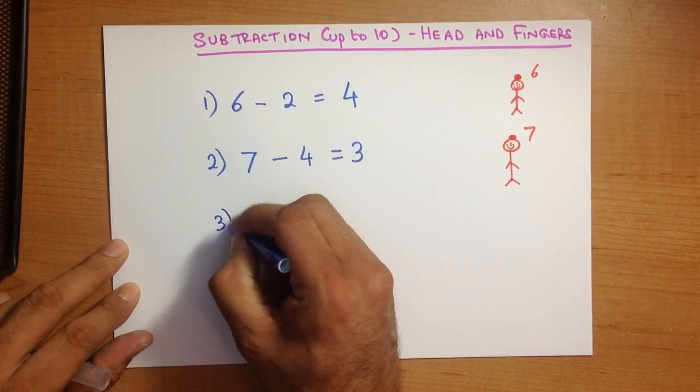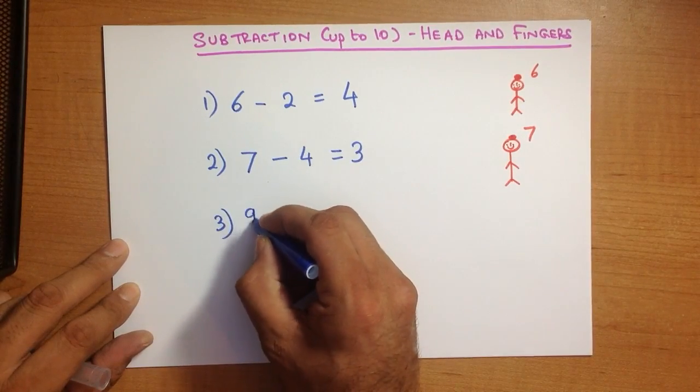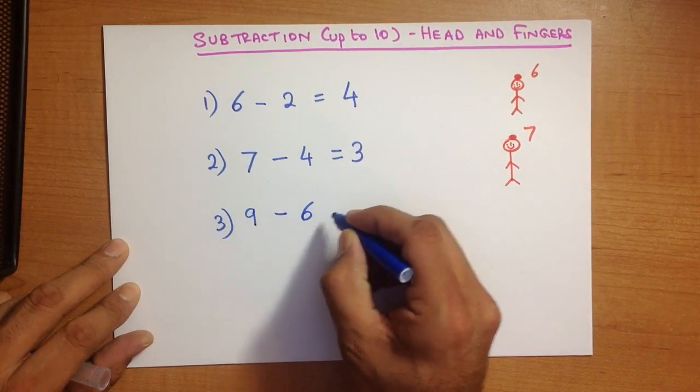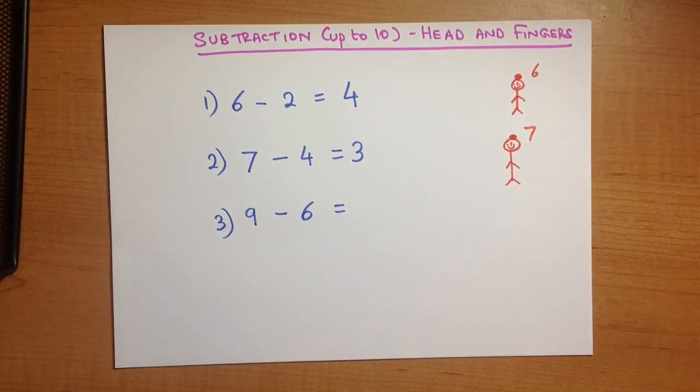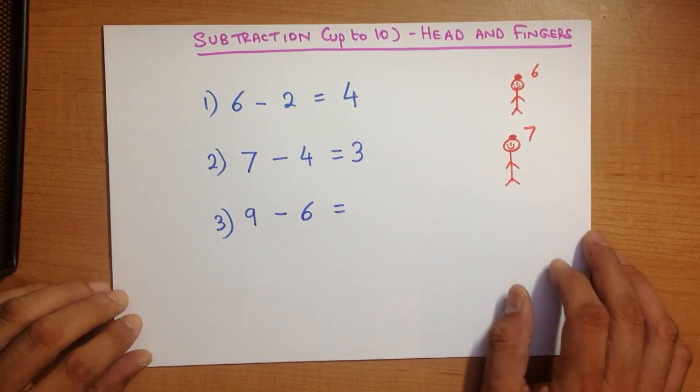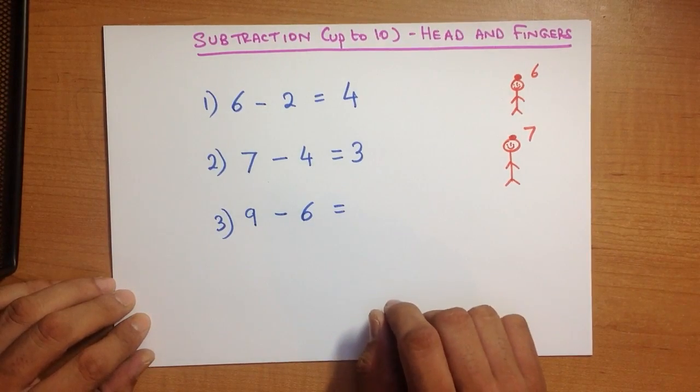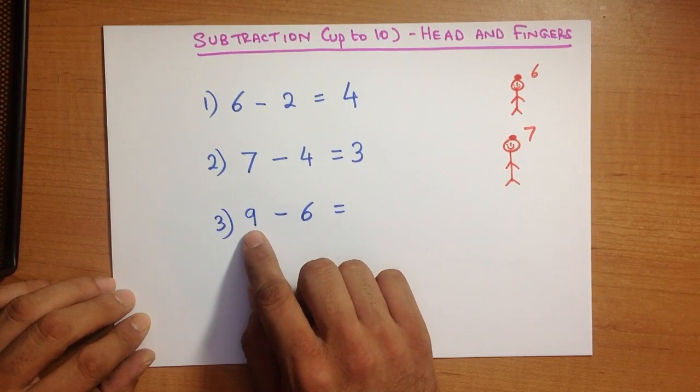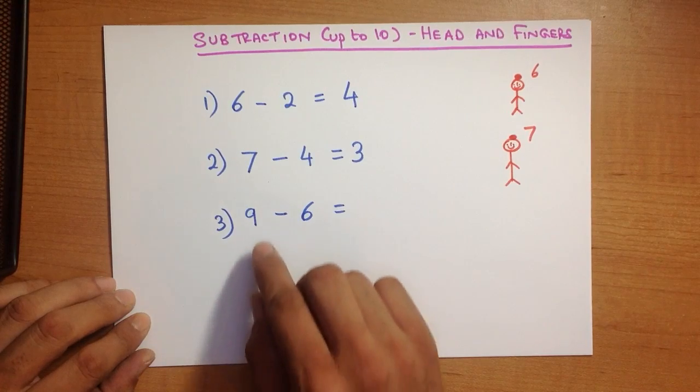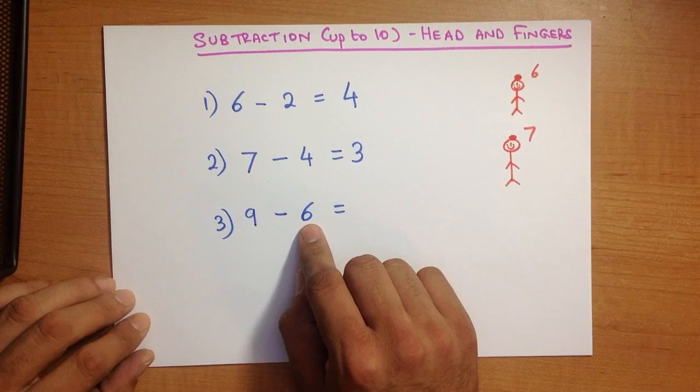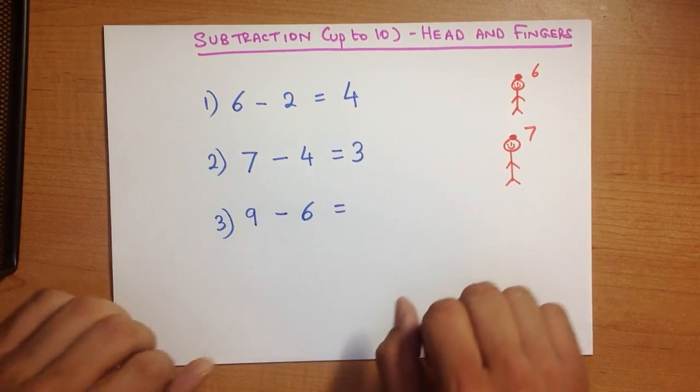Let's work through slightly larger numbers. What is 9 minus 6? I'm not going to draw the figure again, but let's try to work through this together. What is the first number? 9. So I say, there is 9 on my head. Second number is 6.